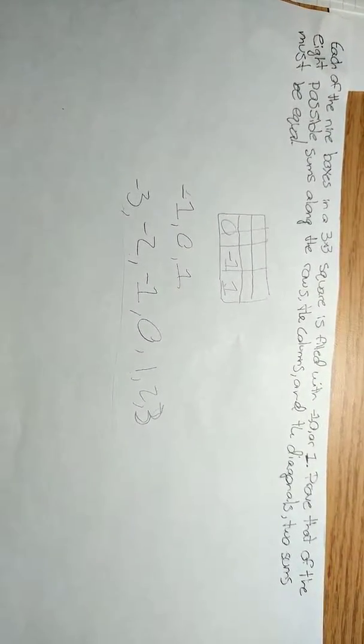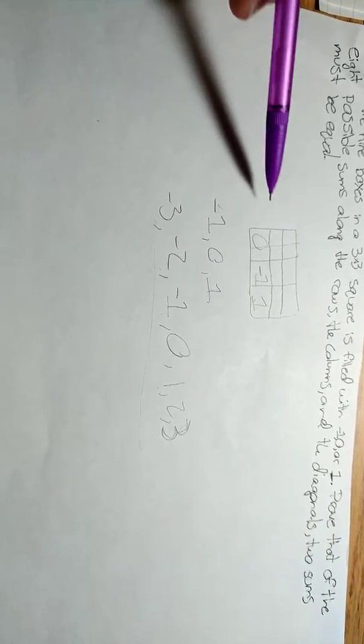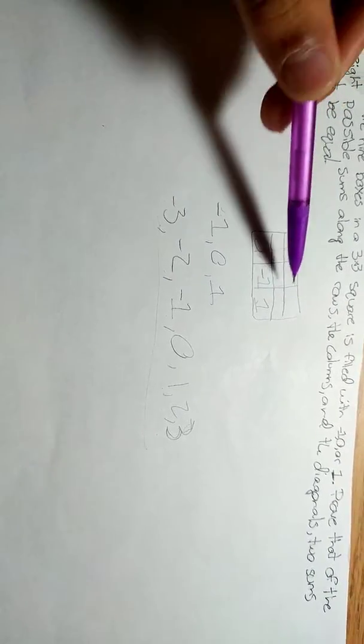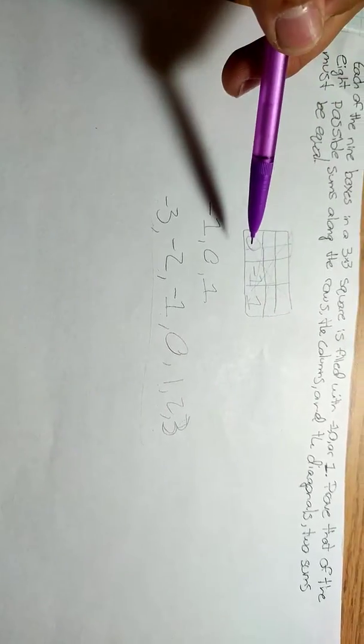Now, there are eight possible sums. So you have one, two, three, four, five, six, and then the two diagonals.